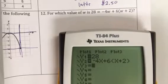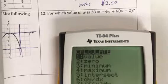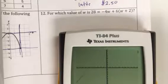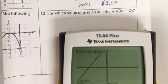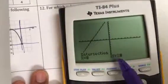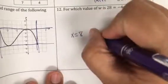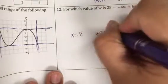If y'all will remember, this is where we go to second trace. We're looking for the intersection, so we press 5. Let it graph. So our intersection is 8, 28. So our x is 8, our y was 28.